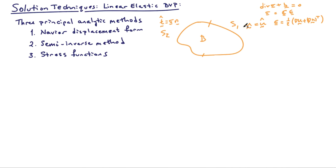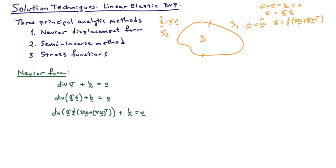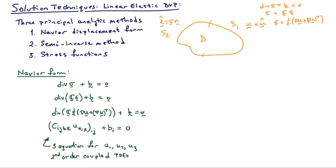In the Navier method, we start with the equilibrium equation. We substitute in the stress-strain relationship to get equilibrium in terms of strains, and then substitute in the strain-displacement relationship to get equilibrium in terms of the displacements. We've combined the three governing equations into one set. Written indicially, there is one free index, giving three equations with three unknowns: u1, u2, and u3. These are three coupled second-order partial differential equations, second-order because two derivatives are present.